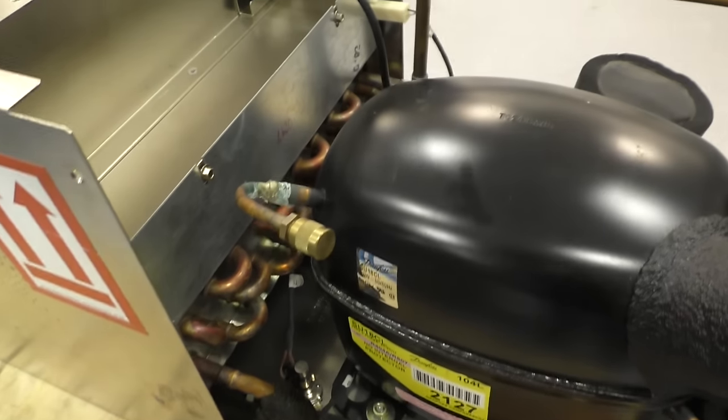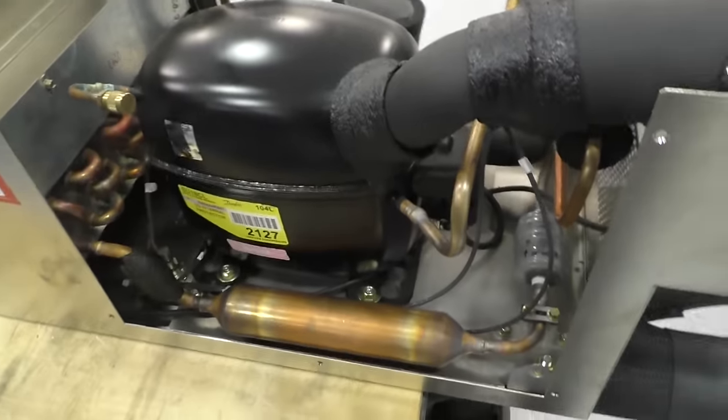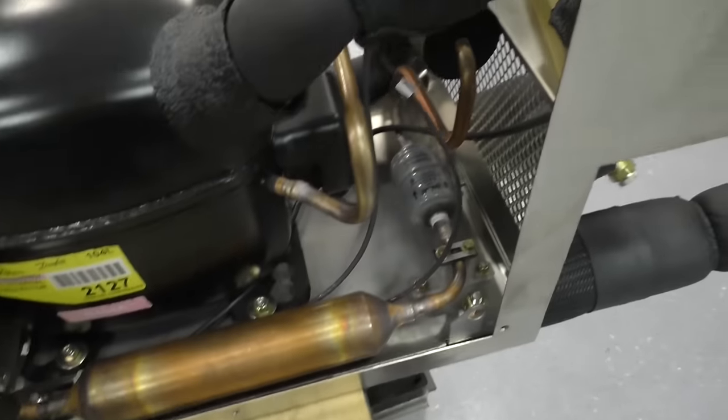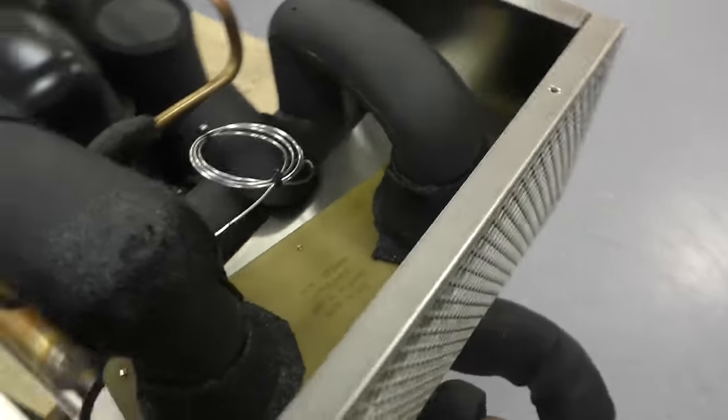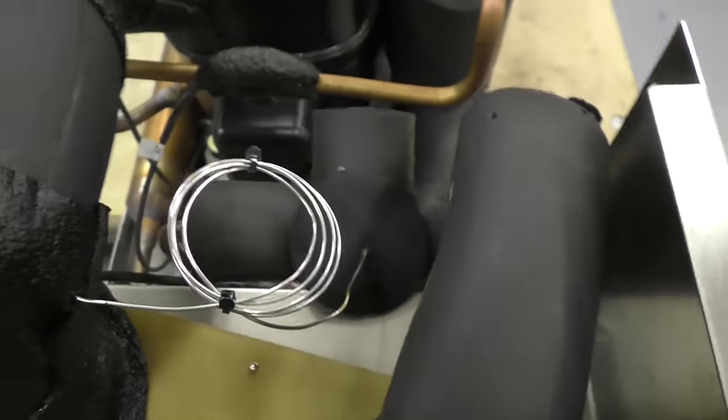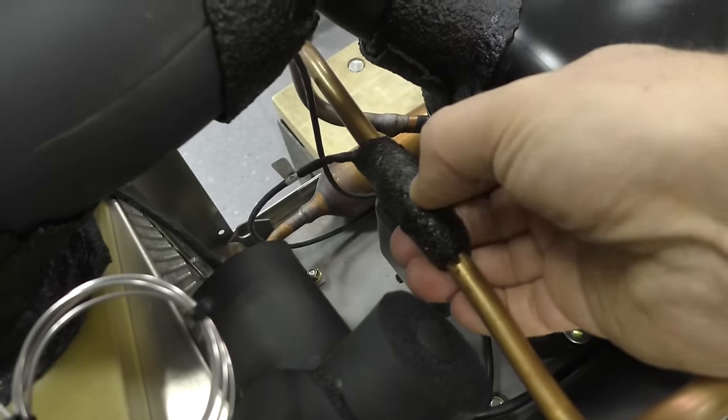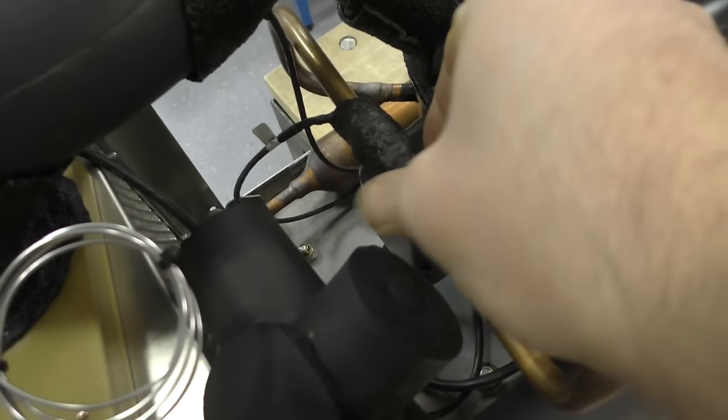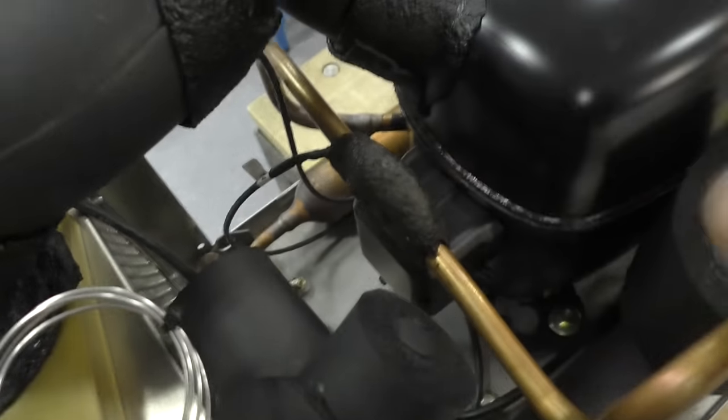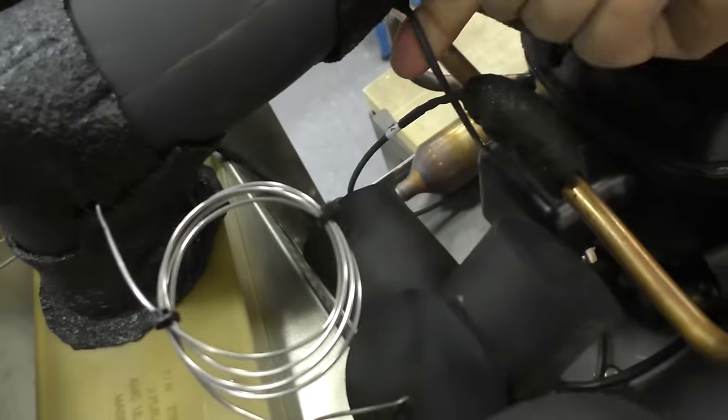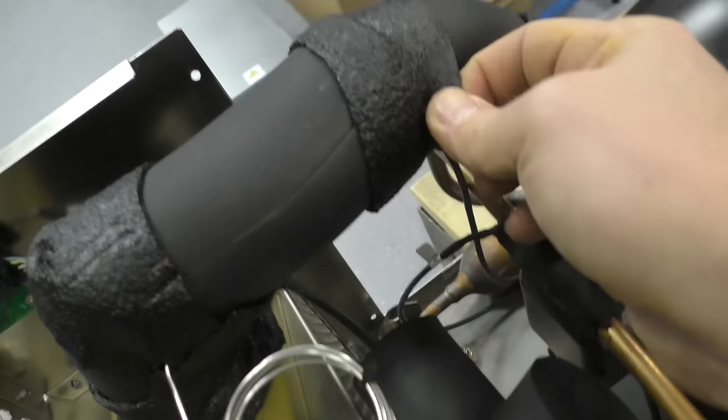We have a compressor, something similar you will find in a fridge or in an air conditioning unit. We have some insulated hoses that go to the outlet ports and the inlet ports. We have some temperature sensors here glued to this, I think that's the return line. And there is another sensor, maybe that's the output line, yes I think that's it.